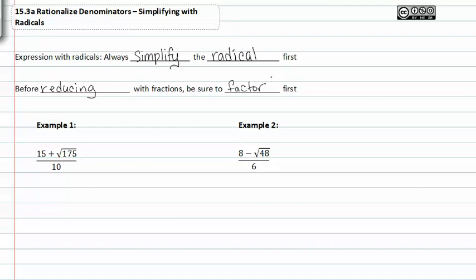Once again you can't divide out terms but you can divide out factors and that's why it's very important to factor before you reduce your fraction. In example one we have fifteen plus the square root of 175 divided by ten.